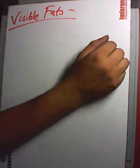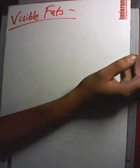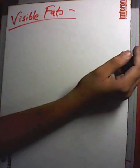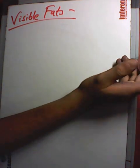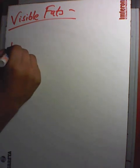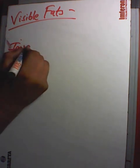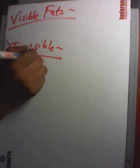Visible fats are those that are separated from their natural source — for example, ghee from milk, and cooking oils from seeds and nuts. It is easy to estimate their quantity. Invisible fats are those fats which are not visible and we never consider them, but they are also fats. They are present in almost every article of food, like cereals, pulses, milk, and eggs.